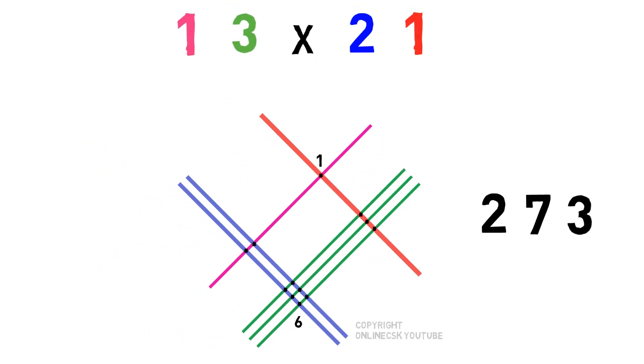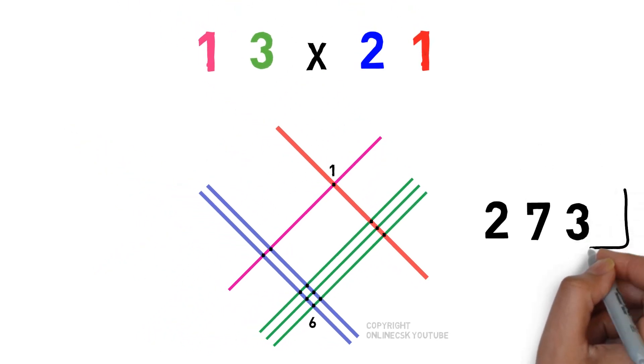Similarly for tens digit I'll count: one, two, three, four, five, six, and one more is there. So six plus one, the total is seven. So this is our tens digit. Now to calculate the hundreds digit, the remaining intersecting points are one and two, which are the leftmost intersecting points. So the final answer is 273.